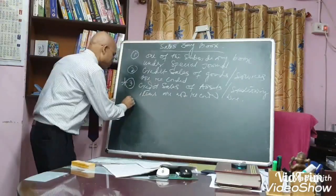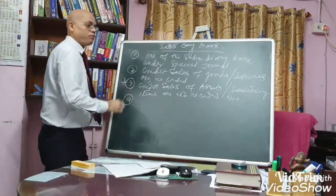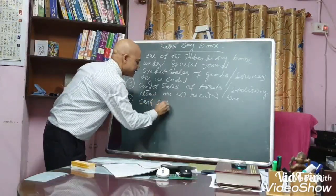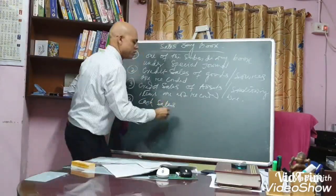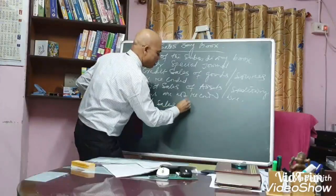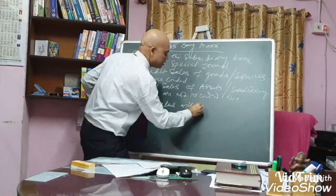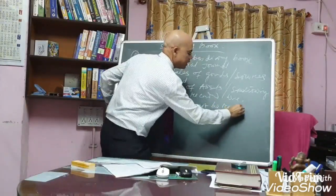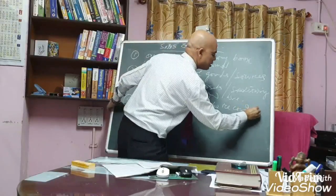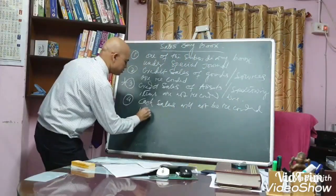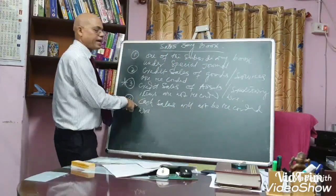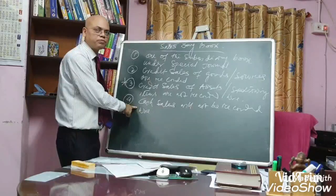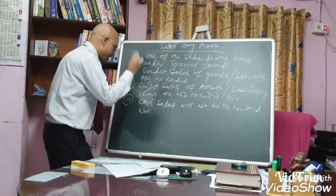Number four: cash sales will not be recorded here. Cash sales will be recorded in the cash book. This will not be recorded here.